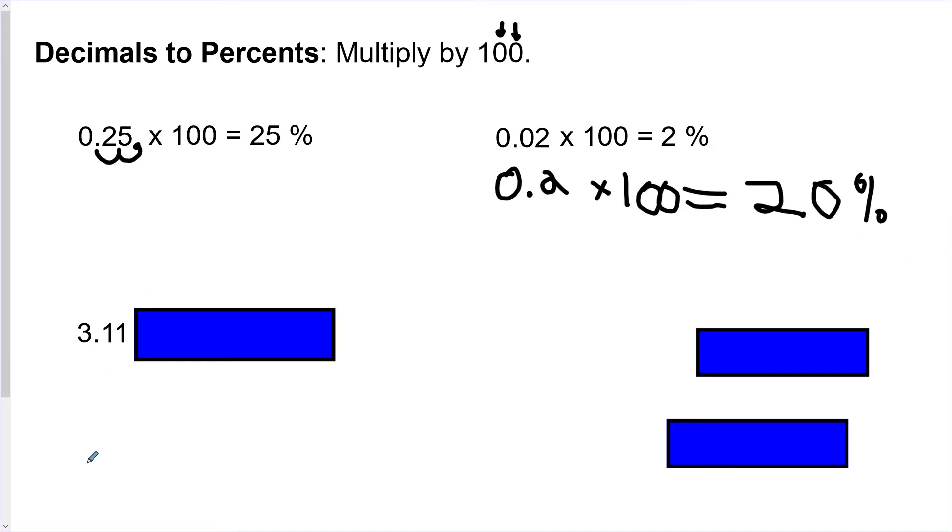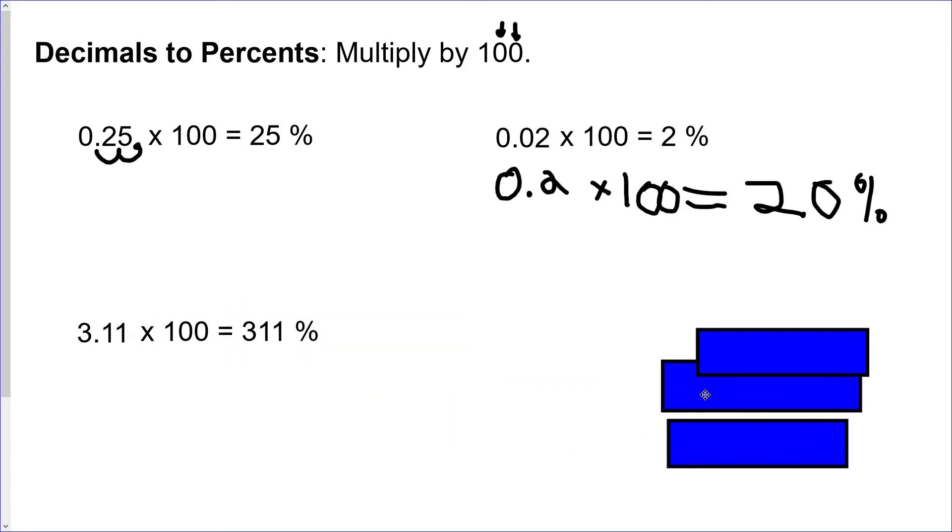Now when you get numbers that are bigger than one, you still do exactly the same thing. You multiply by 100, you move that decimal place two spots over, and you end up with 311 percent. Yes, you can have percents higher than 100. It happens all the time, so just be comfortable with it.